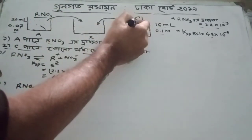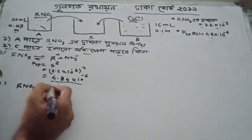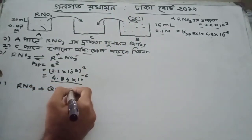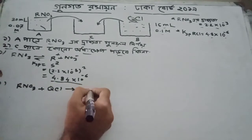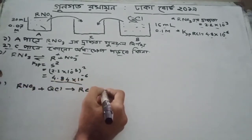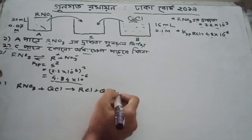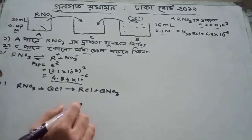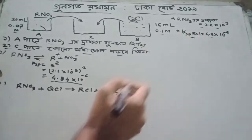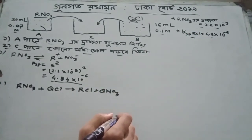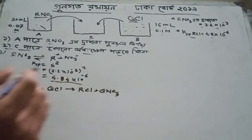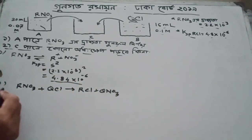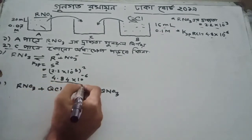A path rate QCL, A path rate QCL. Reaction current: RCL plus Q9TD produce. RCL, RCL, RCL, RCL, RCL.